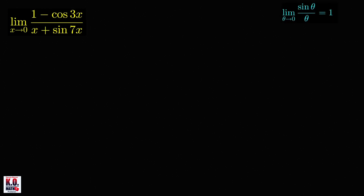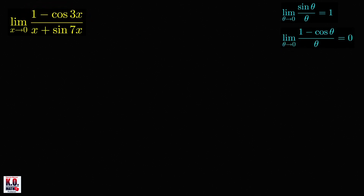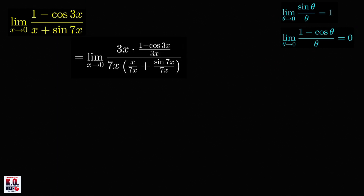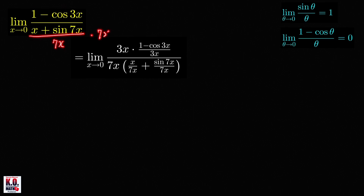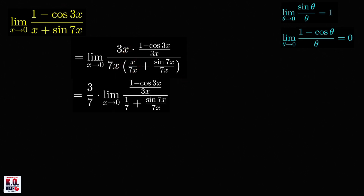We need to use lim sin(θ)/θ = 1 and also the result that lim (1 − cos(θ))/θ = 0 as θ → 0. Since we see 1 minus cos(3x) in the numerator, we divide the numerator by 3x and multiply by 3x. In the denominator, we divide and multiply by 7x. Canceling the common x factors, we can write this limit as 3 over 7 times the limit of the resulting expression.